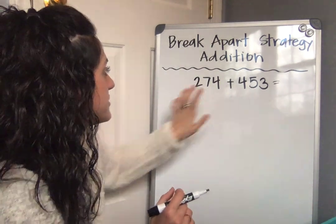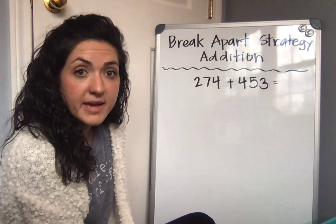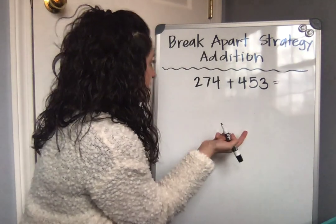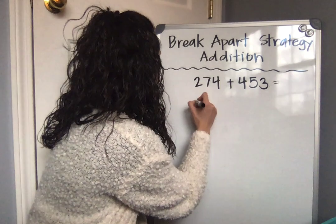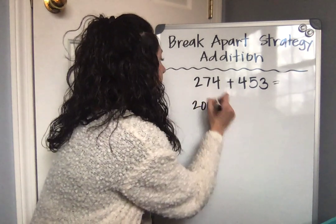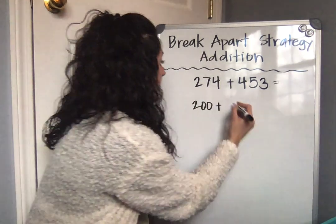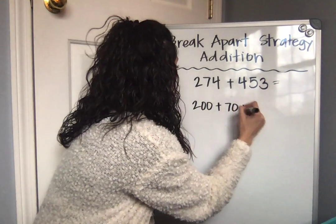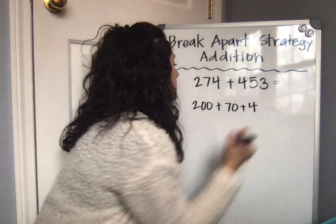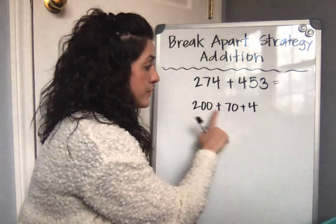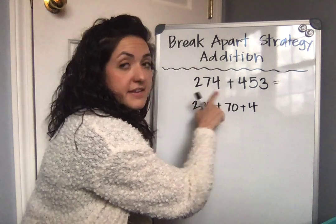So we're going to start with 274. When I write 274 in expanded form, I start by looking at the hundreds place. I see two hundreds in the hundreds place, so I know that's equivalent to 200. When I look at the tens place, I see seven — I know that's equivalent to 70. And when I look in the ones place, I have four ones, which is just equal to four. So I have 200 plus 70 plus four, or 274.